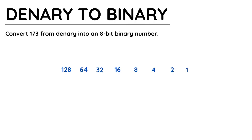I've started by writing out 1 on the right and doubling each time until I have 8 values for the 8 bits required. You'll recognise these numbers if you have previously converted from binary to denary. I've written my denary number 173 clearly on the side of the page.